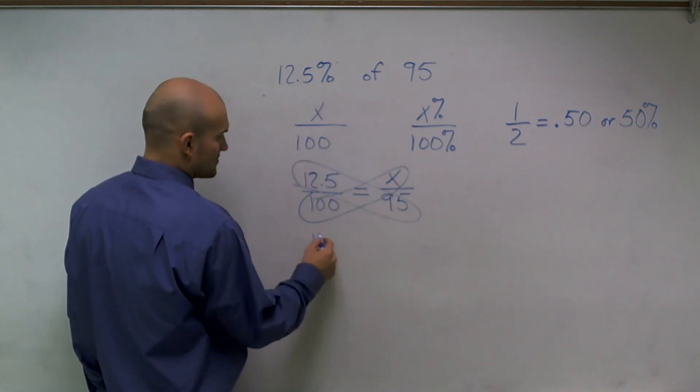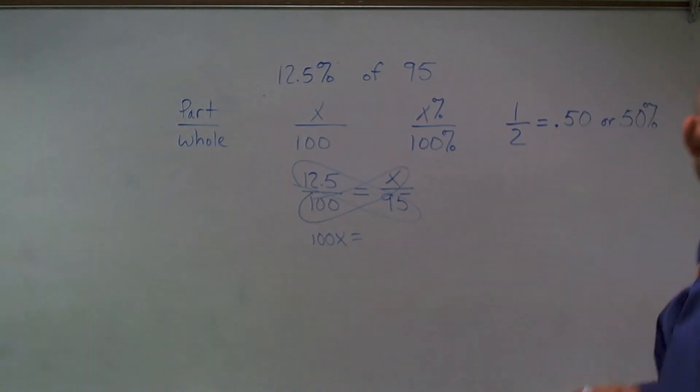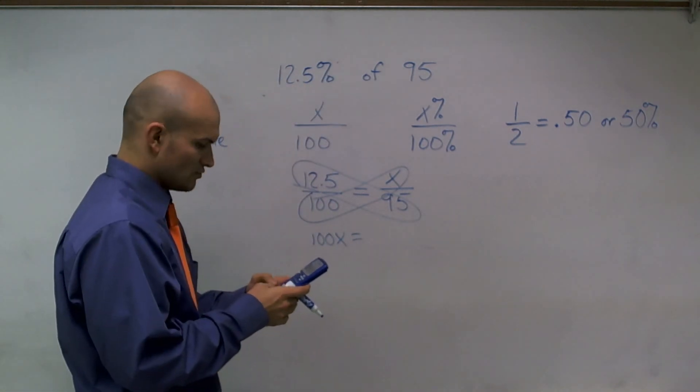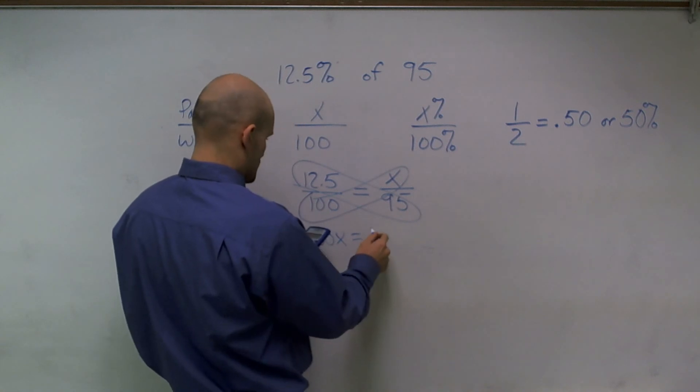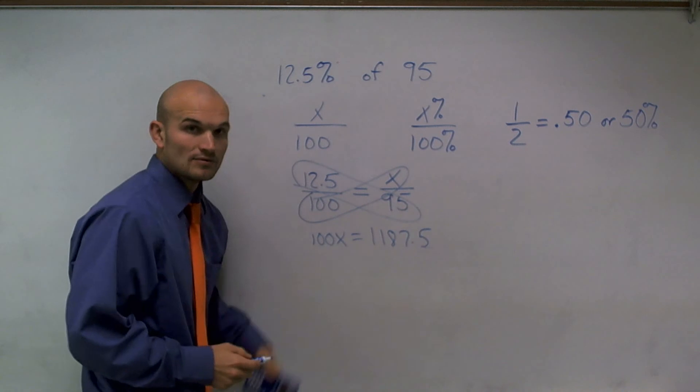So I have 100 times x equals, and actually, I didn't do this over here. So I'll take my calculator, I'll do 95 times 12.5. And what I have is 1,187.5. Now, to solve for x,